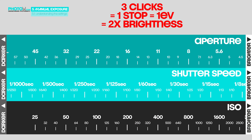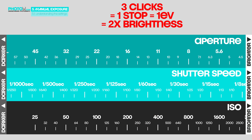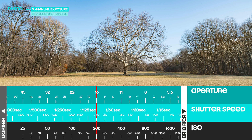To make an image one stop brighter means either 3 clicks aperture, or 3 clicks shutter speed, or 3 clicks ISO. If you change each of them by 3 clicks, that would be 3 stops. Let's see what that means when we take images. Here is our scene again. I'll start at f16, 1/100th, ISO 200, and take an image.